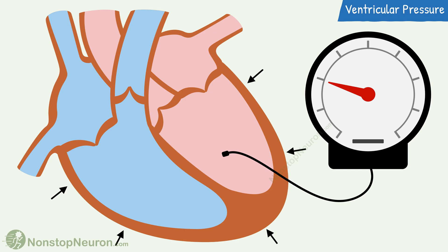Then comes the phase of isovolumetric contraction. During this, the ventricles contract as closed chambers, so there is a sharp rise in pressure. Soon, the pressure rises above that in the major arteries, so the semilunar valves open.